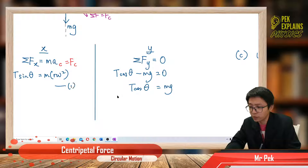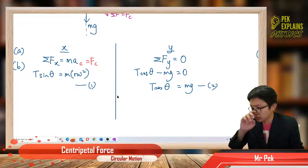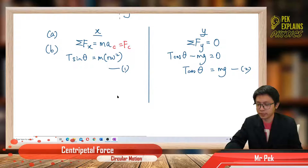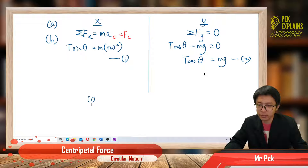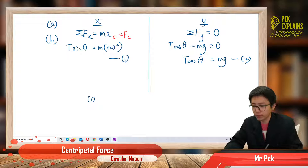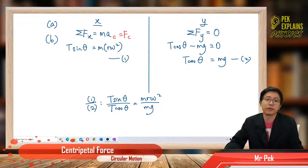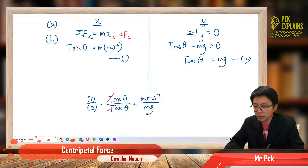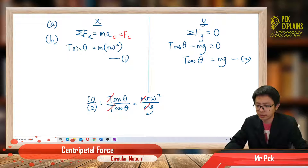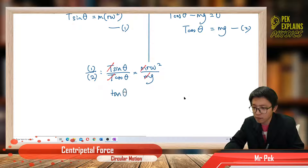We now have two equations. We must do simultaneous equations. Take equation 1 divided by equation 2 — sine divided by cosine — to get tan θ. So T sin θ divided by T cos θ equals mRω² divided by mg. We can cancel the tension T and the mass m. Sine divided by cosine gives tangent, and we are left with tan θ = Rω²/g.